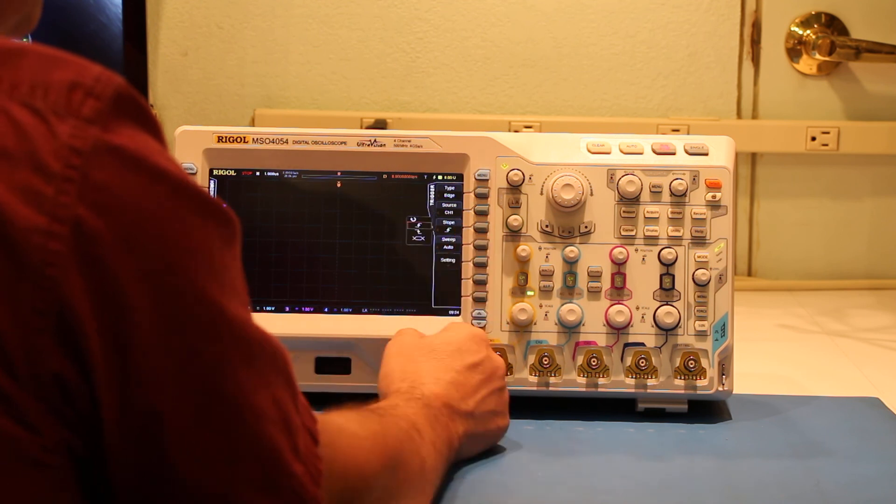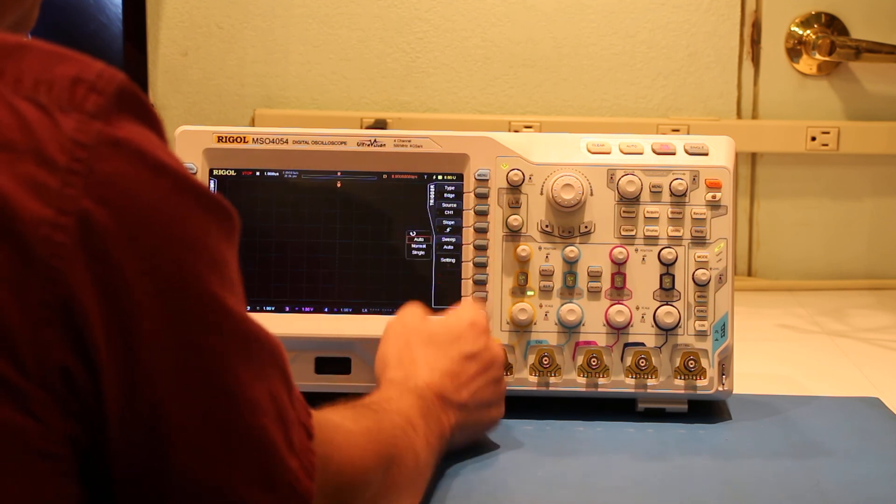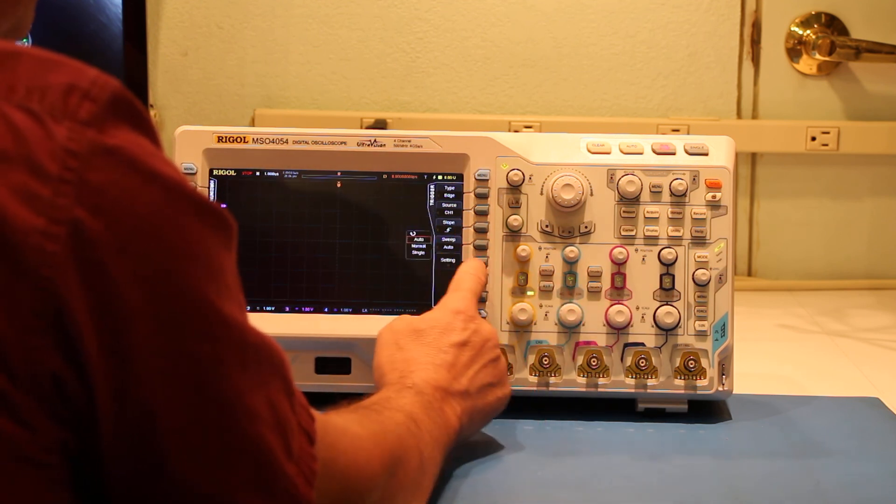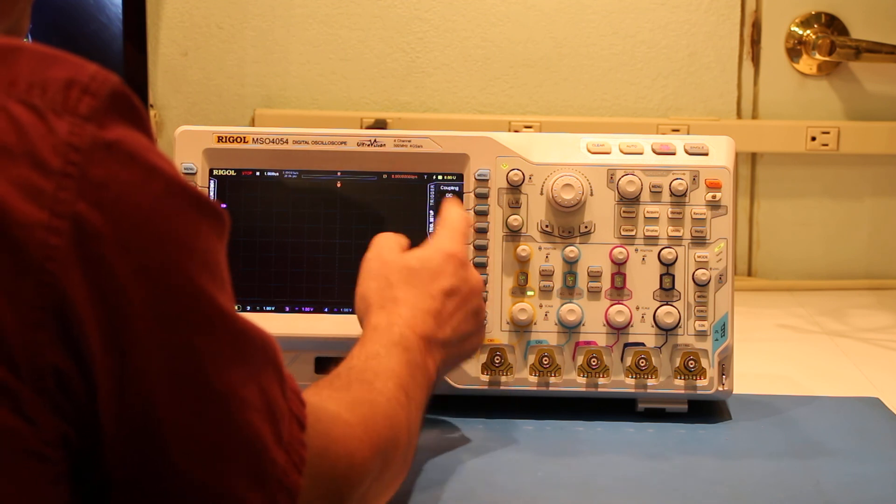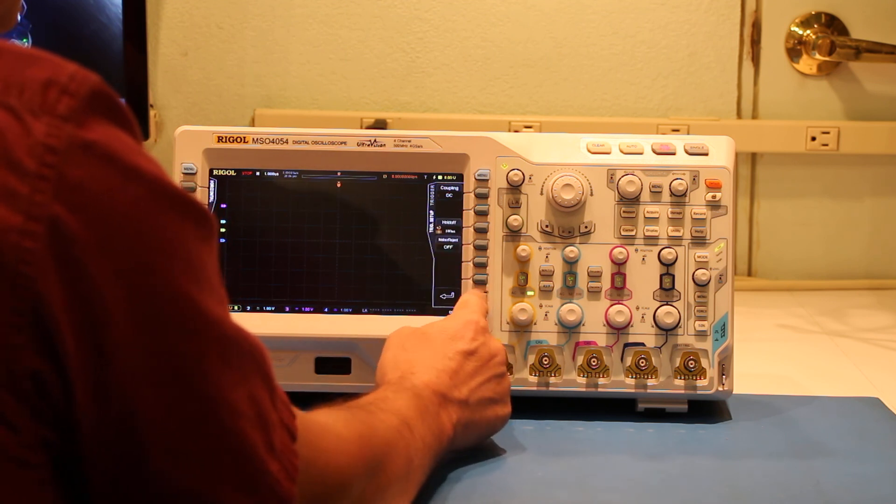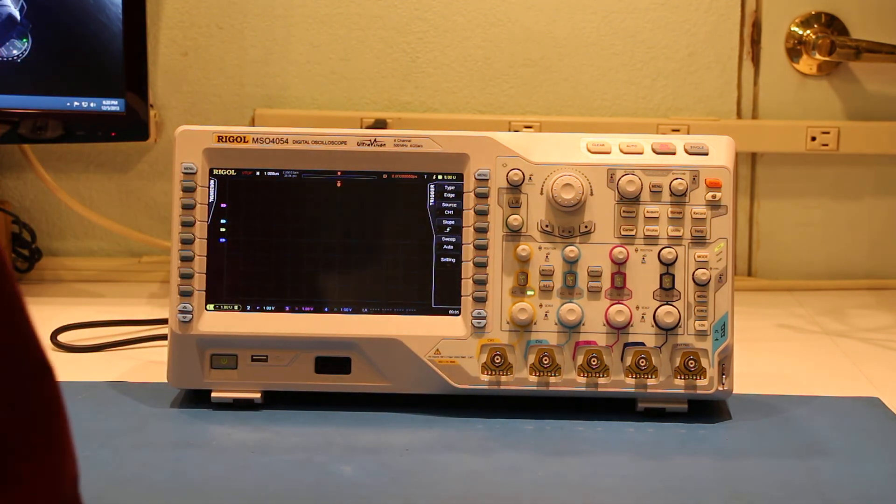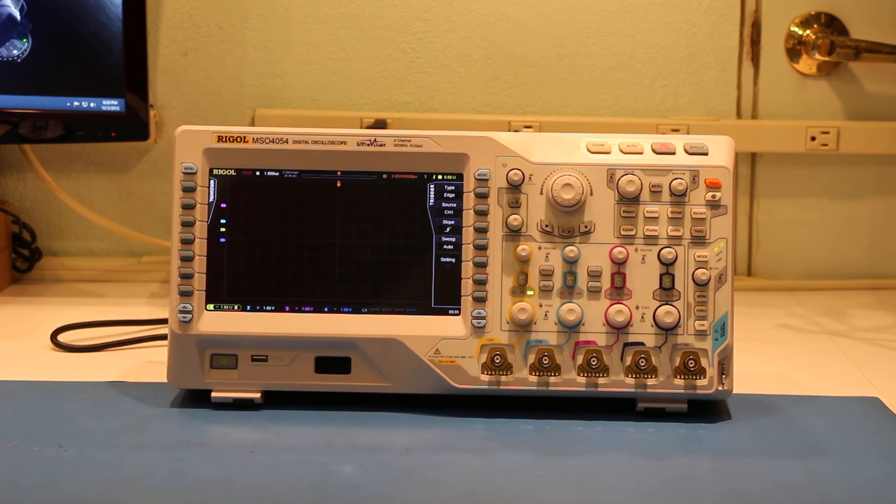Slope: we can change the slope. Sweep back to exactly what we were just at. And setting allows you to do coupling and hold off. So that's a fairly complete set of characteristics for the scope.